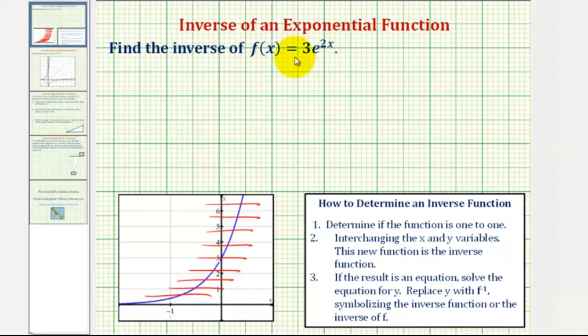So now that we know it has an inverse function, we can find it. Let's begin by replacing f of x with y. So we can write the given function as y equals three times e raised to the power of two x.